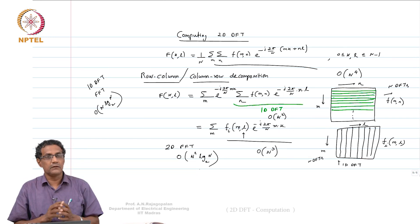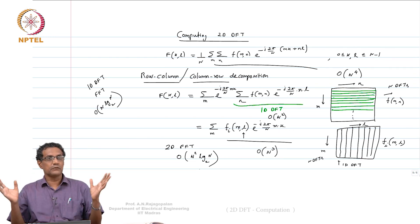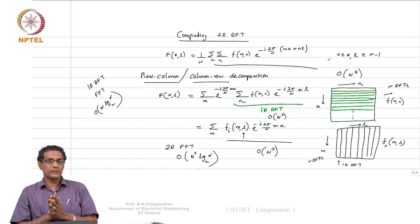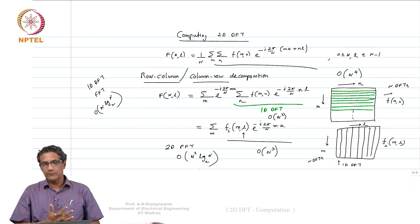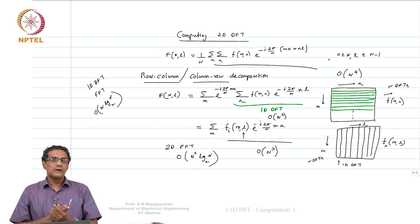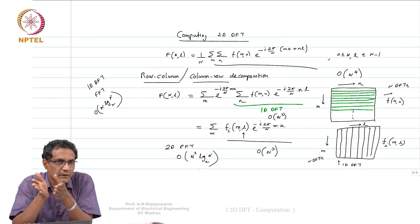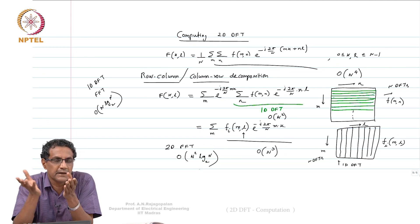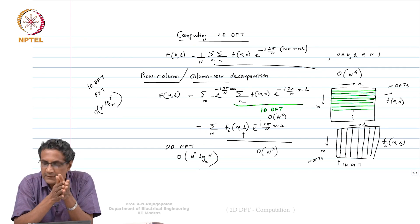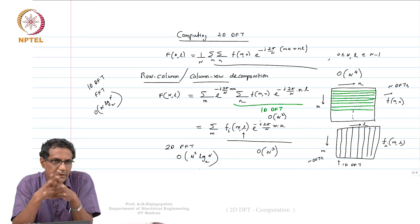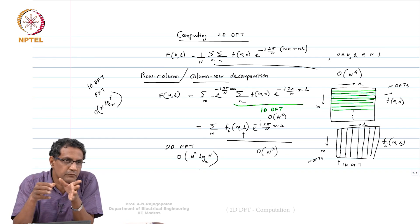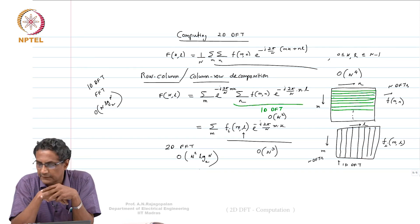So if I give you a 1024 by 1024 image and ask you to do brute force DFT computation, you will be stuck. Whereas if you run it through 1D FFTs and compute it that way, that is the only practical way to do it — nobody does a brute force calculation.